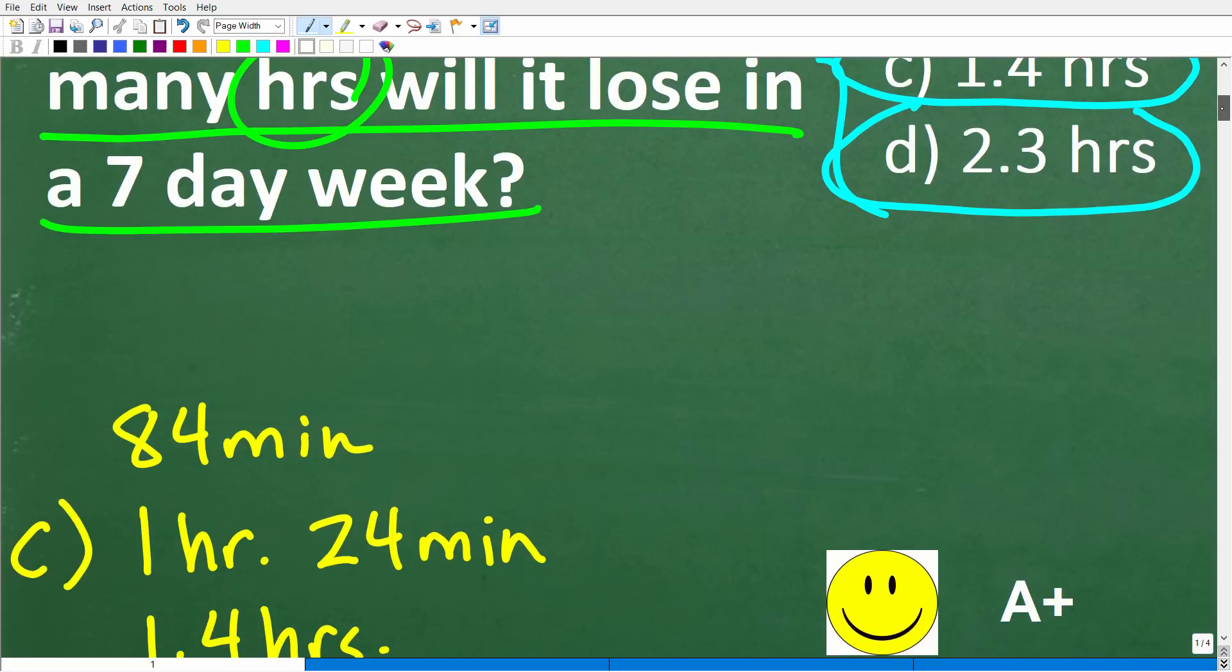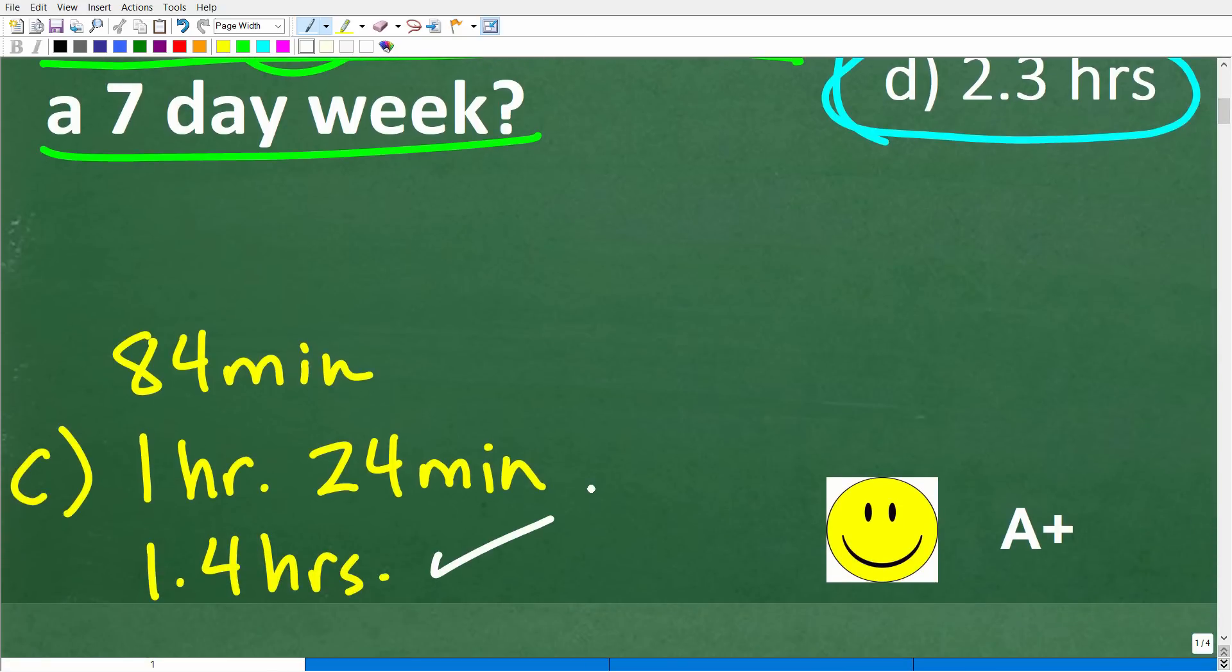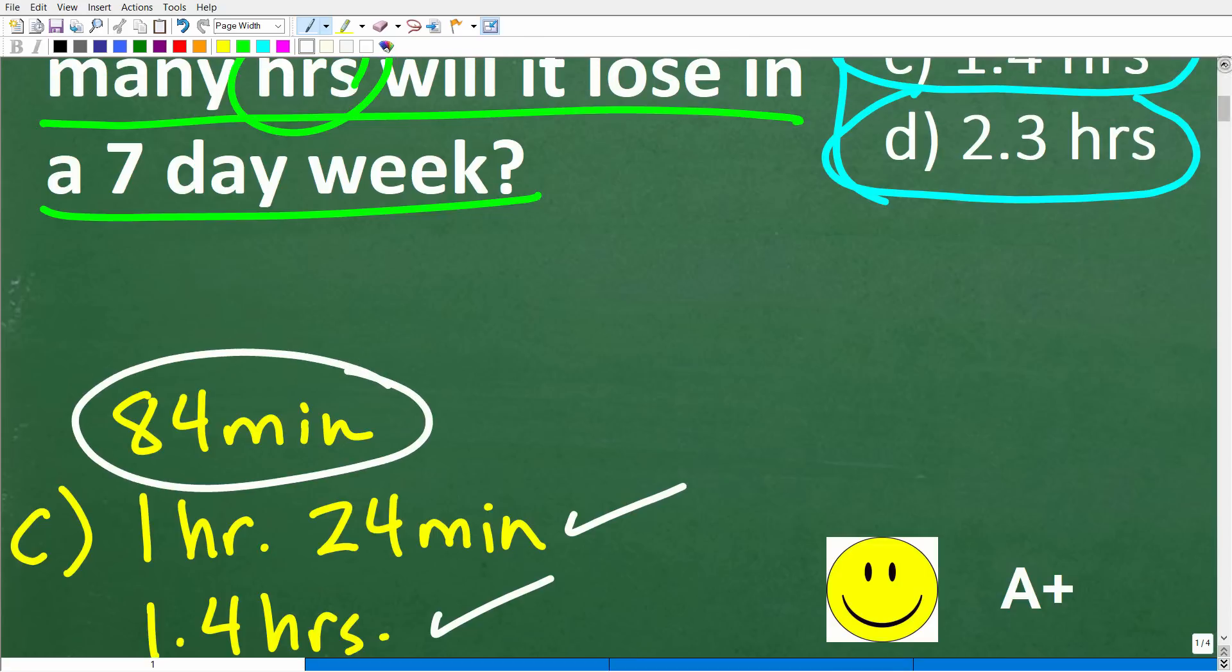Let's go ahead and take a look at the correct answer. The correct answer is C, which is 1.4 hours. But if you came up with one hour and 24 minutes, that is correct as well. And even if you got 84 minutes, that is right.